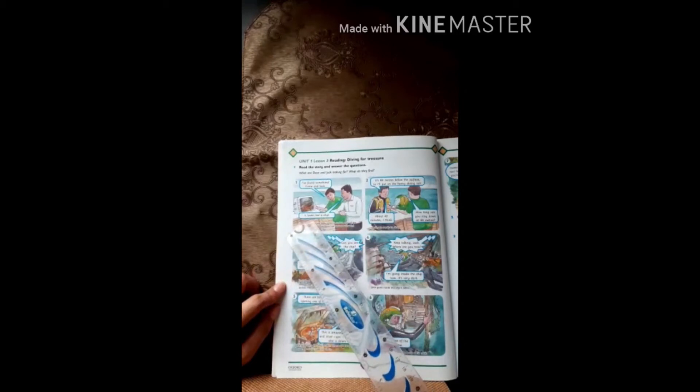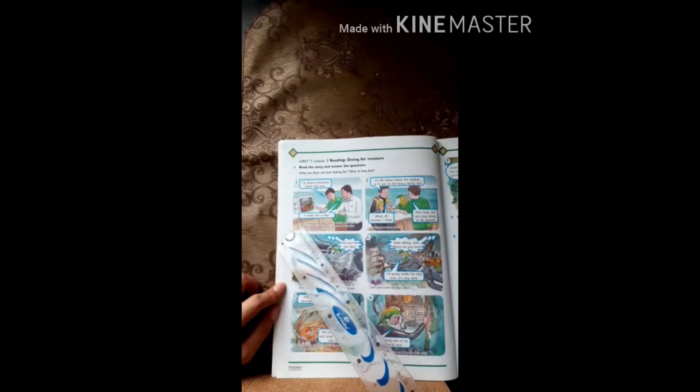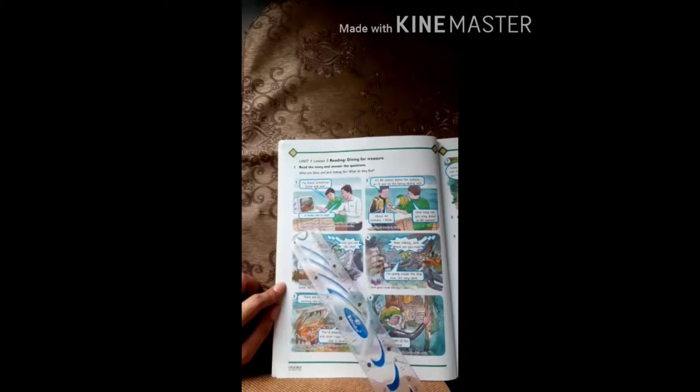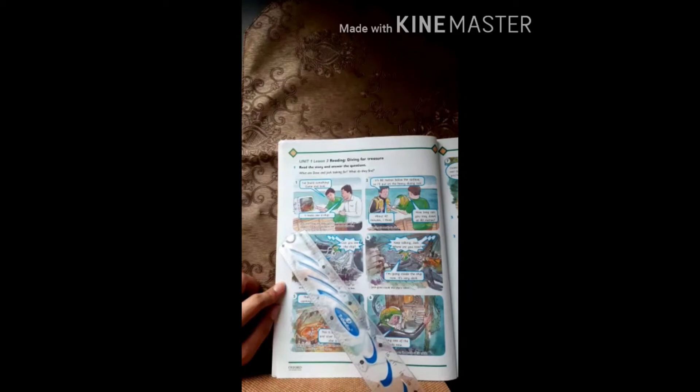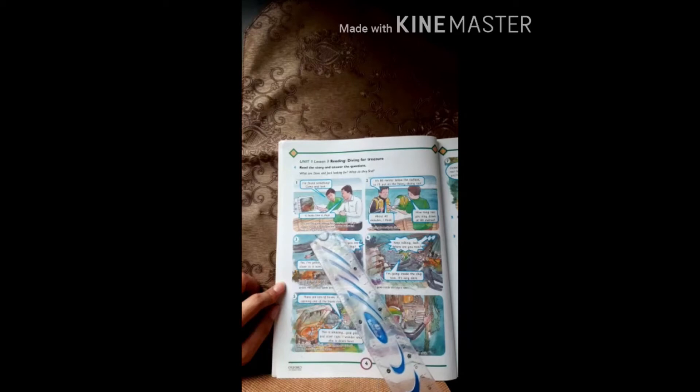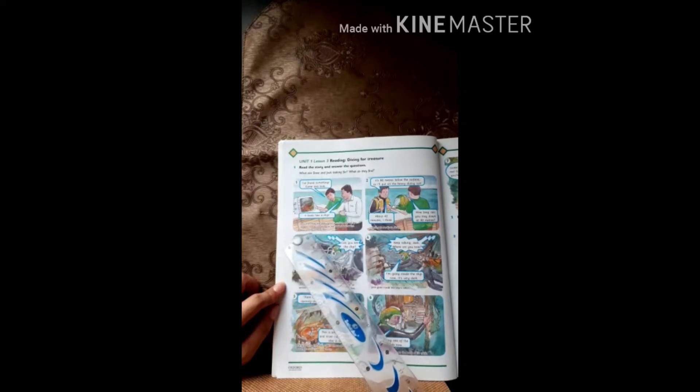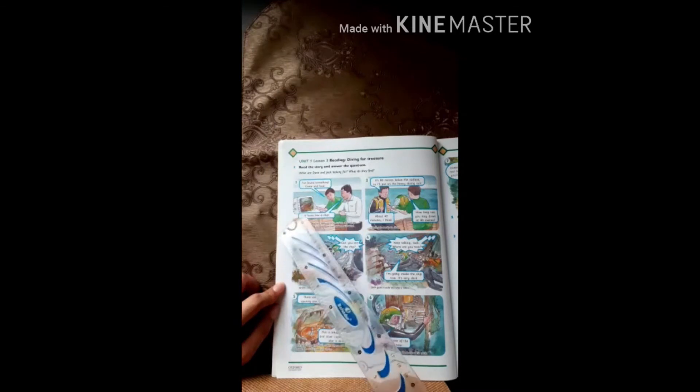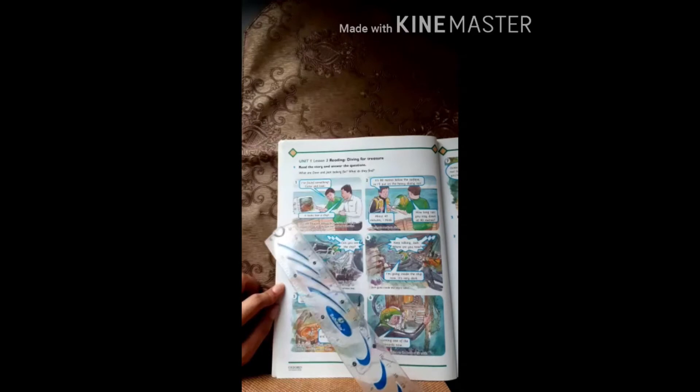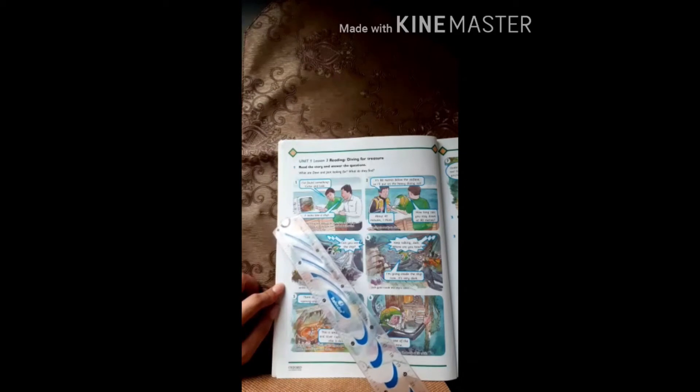Now Jack is saying it looks like a ship, it looks like a ship on the sea bed below the boat on the echo screen. Look at this echo screen, it looks like a ship. Echo means sound.